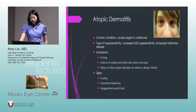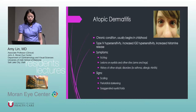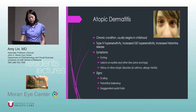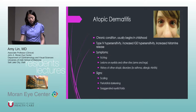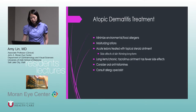Atopic dermatitis is similar but chronic, beginning in childhood. This is a type 4 hypersensitivity with increased IgE and increased histamine release. Symptoms are itching, and there are usually lesions on the eyelids as well as other locations such as arms and legs. There's a history of other atopic disorders such as asthma and allergic rhinitis. Signs include scaling of the skin and periorbital darkening, as shown in the picture.